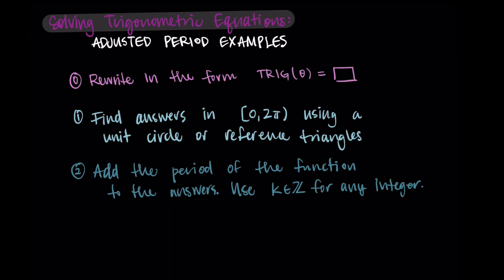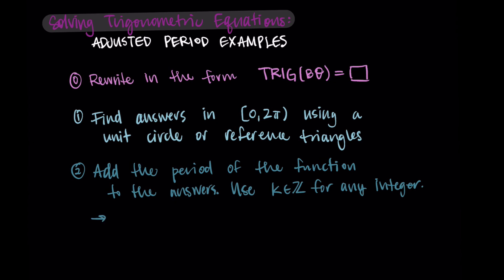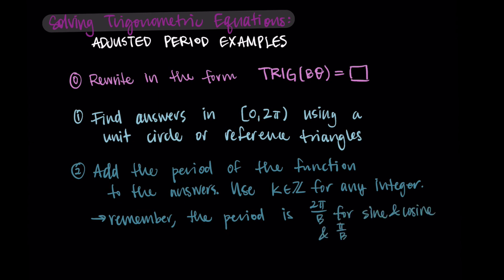Referring back to our steps that we usually use to solve trigonometric equations, we're going to make a couple upgrades to this list to help with these more complicated examples. Instead of writing the problem in the form trig of an angle equals something, we're going to introduce this b value — like trig of b times theta equals something. In the last step where we add the period, the period will be 2π over b for sine and cosine, and π over b for tangent. The same steps hold, we just have this little upgrade.